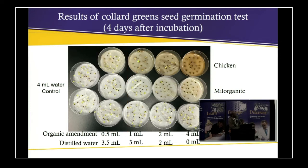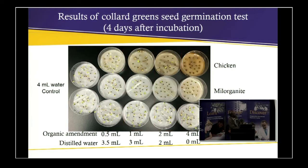When we increased the levels, we started to see germination being affected by chicken manure and Milorganite. At high concentrations without dilution, chicken manure almost completely inhibited germination. The same was true for Milorganite, but dairy manure did not inhibit germination — seeds did well at all concentrations when dairy manure was applied.